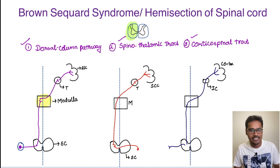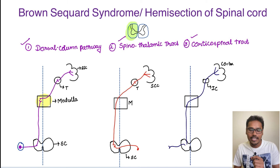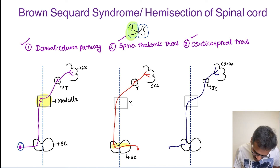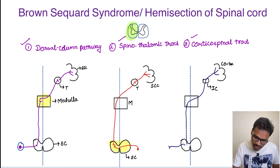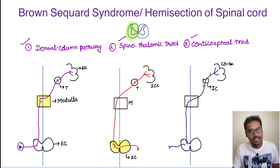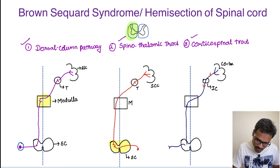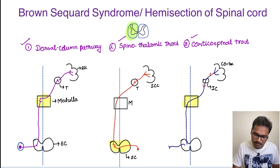The crossing over region will be highlighted to make it easier to understand. The spinothalamic tract carries pain and temperature, and they cross immediately in the spinal cord itself. Coming to the corticospinal tract, it starts from the cortex, goes down to the internal capsule, and then crosses over in the medulla. Now let's come back to our example.